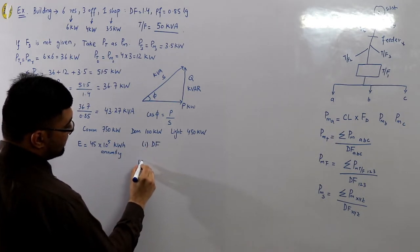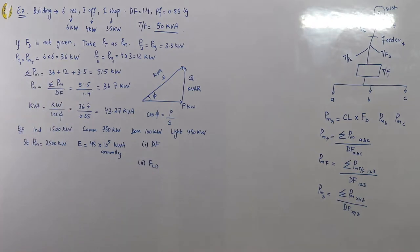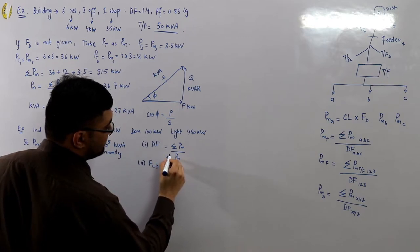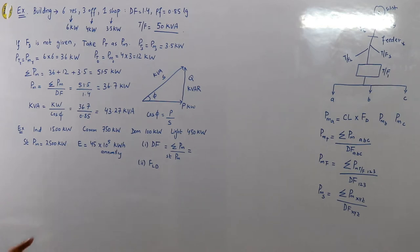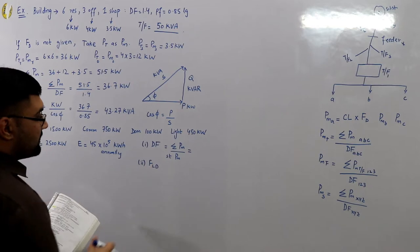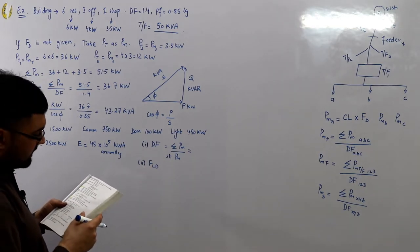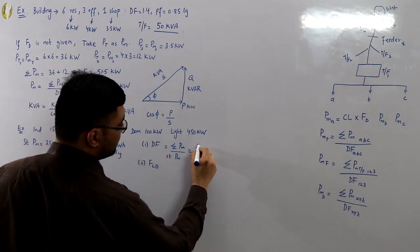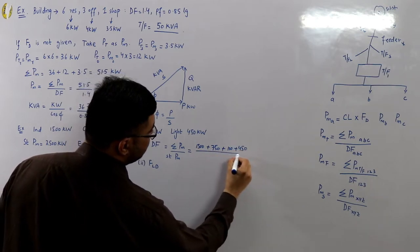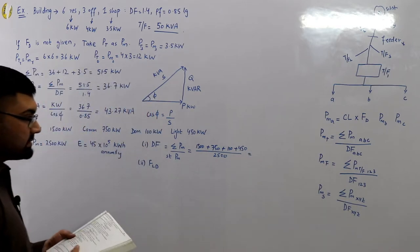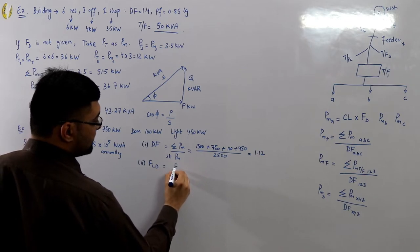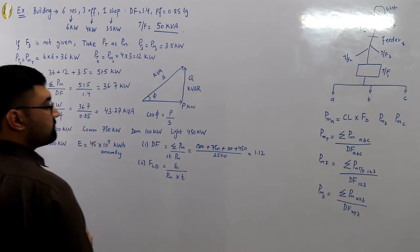The diversity factor = summation of individual maximum demands ÷ maximum demand of the station. Since demand factor is not given, take each load as its maximum demand. Summation = 1500 + 750 + 100 + 450 = 2800, divided by 2500. The diversity factor comes out to be 1.12.